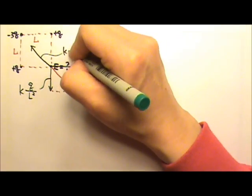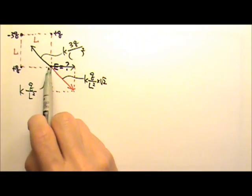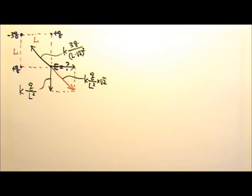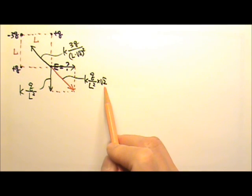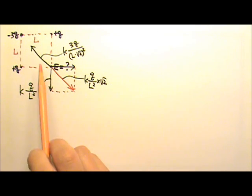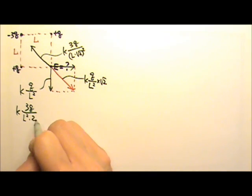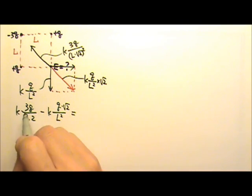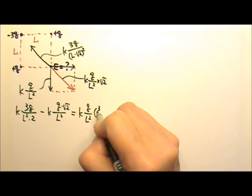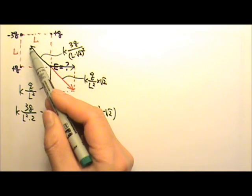The field from the negative charge is k times 3q over (l times root 2) squared, which simplifies to k times 3q over 2l squared, giving a factor of 3 halves. The diagonal sum of the two equal fields is kq over l squared times root 2. Since 3 halves is larger than root 2, we do the bigger side minus the smaller: k3q over 2l squared minus kq root 2 over l squared, which factors to kq over l squared times (3 halves minus root 2). The net field points toward the negative charge.